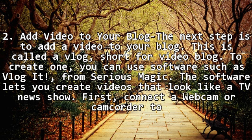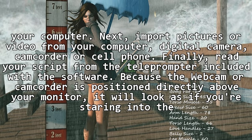Step two: add video to your blog. The next step is to add a video to your blog — this is called a vlog, or video blog. To create one, you can use software such as Blogit from Serious Magic. The software lets you create videos that look like a TV news show. First, connect a webcam or camcorder to your computer. Next, import pictures or video from your computer, digital camera, camcorder, or cell phone.